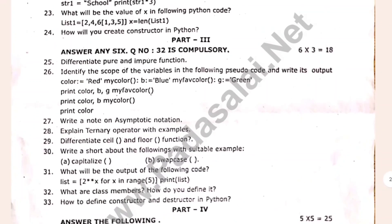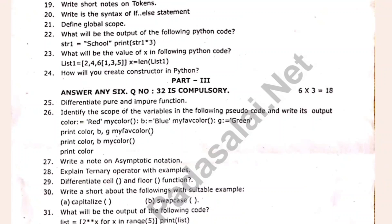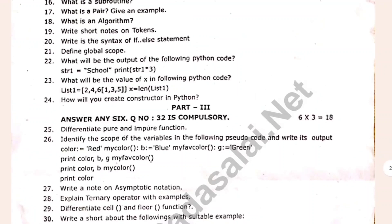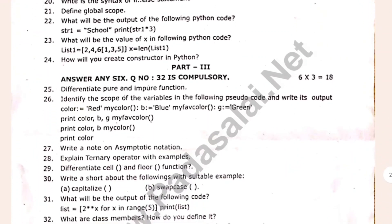What are class members? How do you define it? They are 3 marks. You can tell their maximum public exam and you can tell their first chapter. What is a sub root? What is a pair, given example? What is an algorithm? What is the syntax of an if statement? What is a global scope? You will need to create a constructor in Python. Let's do 3 marks.